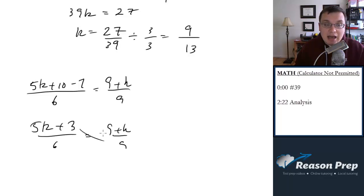9k plus 9. Now we'll cross multiply. We get 45k plus 27 equals 54 plus 6k. Exactly the same place we were before. We'll get the same answer. So actually that was easier, I think, than the way I presented it.